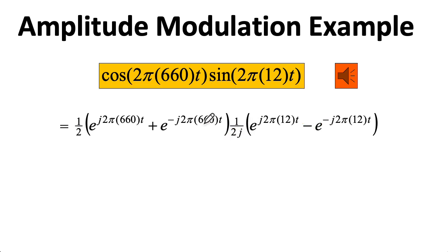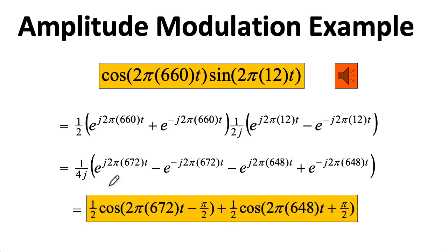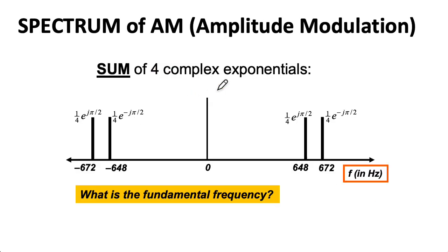You can then just do the algebra on these exponentials and expand this out. And if you wind up figuring out what's happening with the minuses and with the j in the denominator, you can then recombine this as the sum of cosines. Notice there's a phase of minus π over 2 here and a phase of π over 2 here. So if you look at this form right here, although you could readily get it from here as well, the spectrum of this amplitude modulation signal looks like this. You just have two real sinusoids or four complex exponentials.